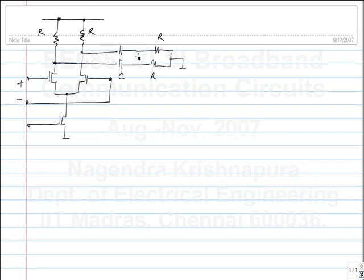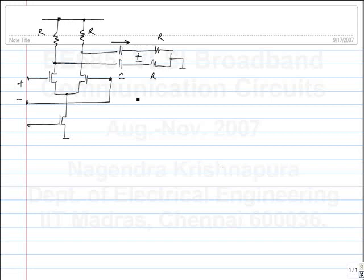What will be the output voltage if the input is constantly one for a long time? If it is DC, no DC can flow through the capacitors, so the current through the resistances is zero. Each of these will be at zero volts. So if there is a string of consecutive ones or minus ones, the output will tend to zero. You cannot have a very long string of ones.